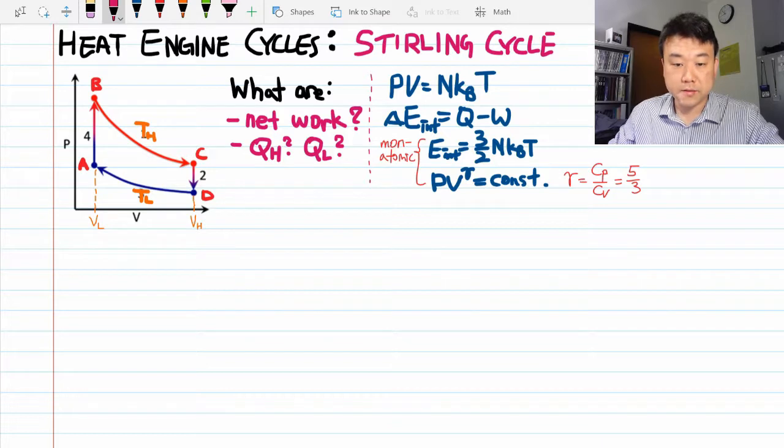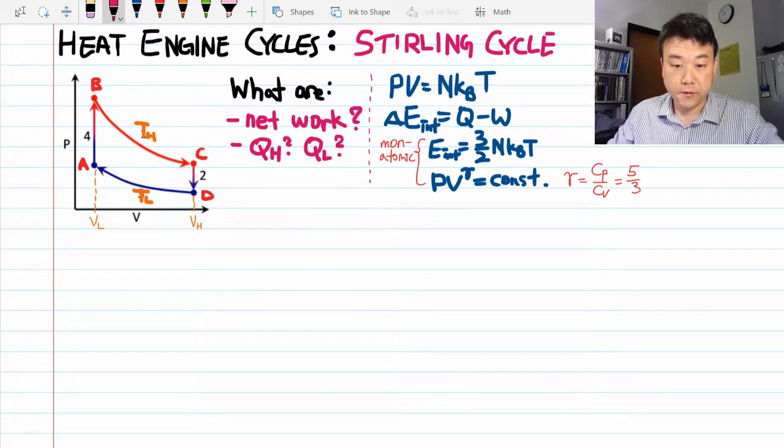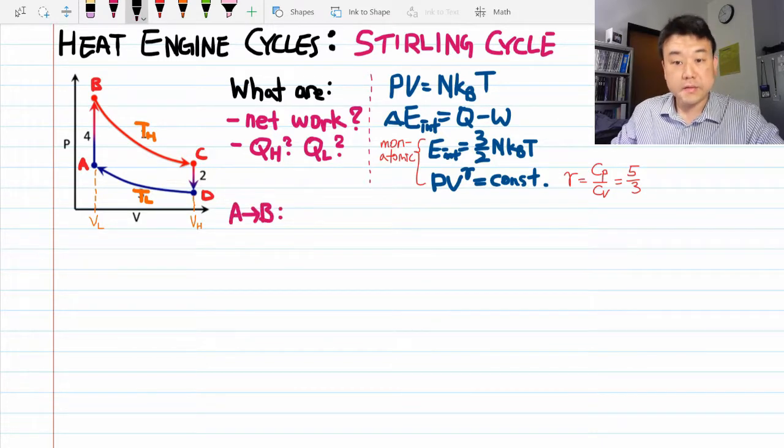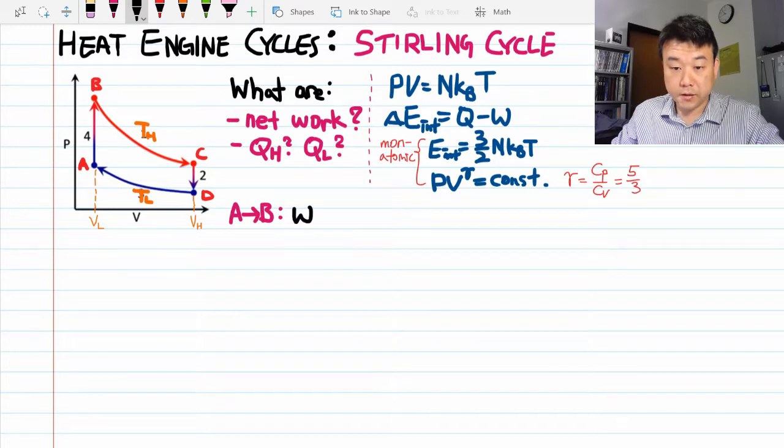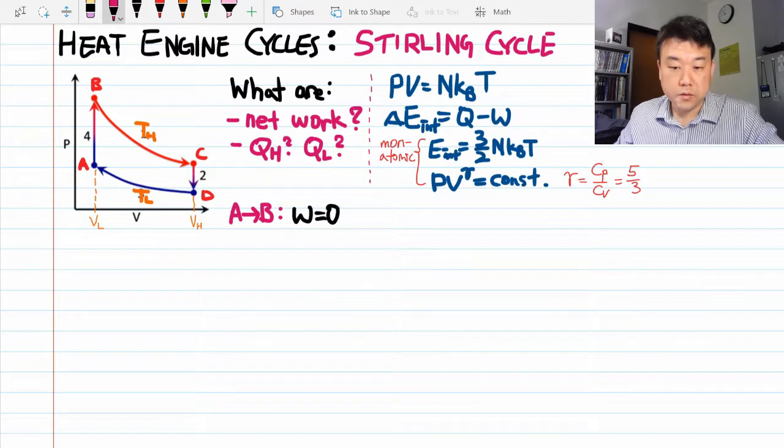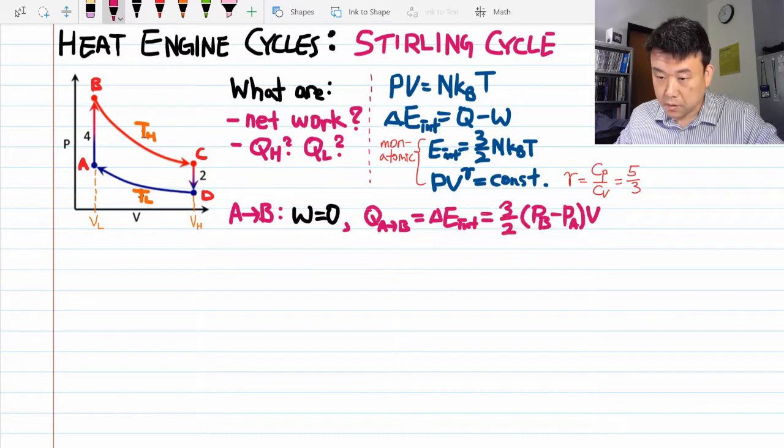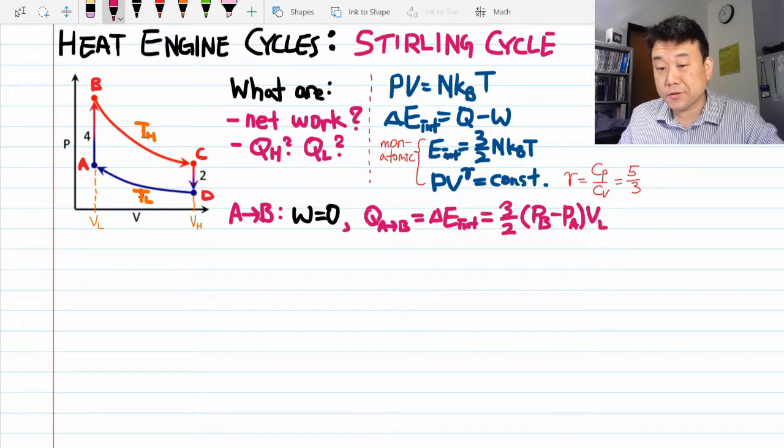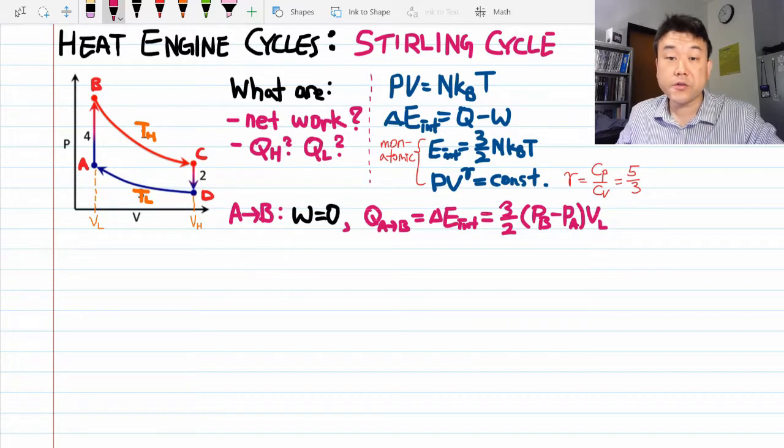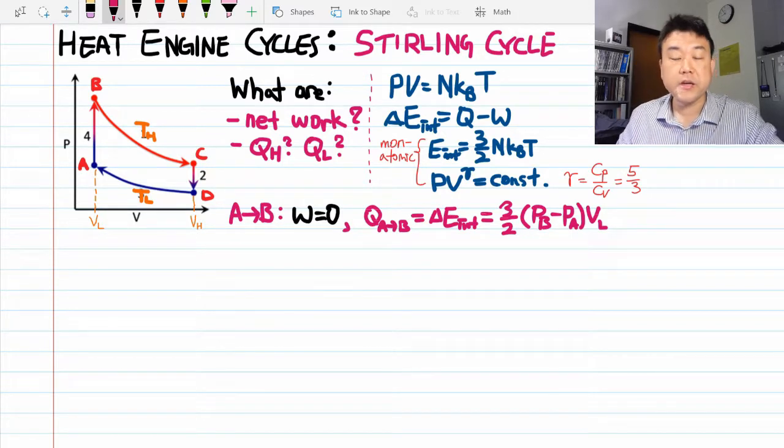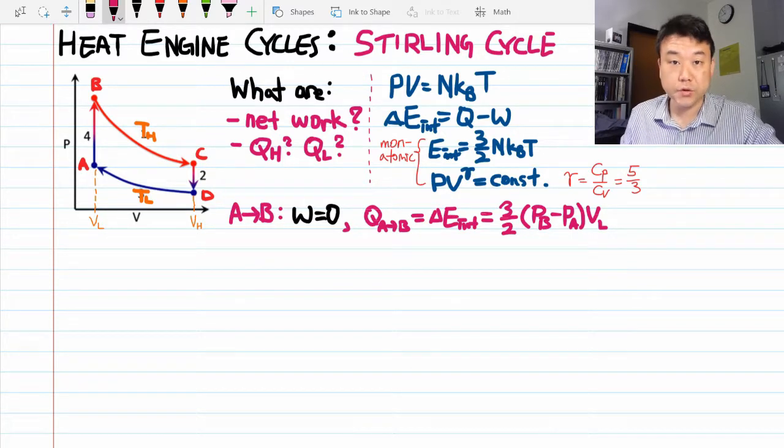The first process is isochoric heating from A to B. Since it's isochoric, the work done is zero. Nice and easy. So the first law says that the heat transferred from A to B is equal to the change of internal energy. We've done this many times before. So I first wrote it using the expression for the internal energy and then rewrote it in terms of pressure and volume since it's more useful.